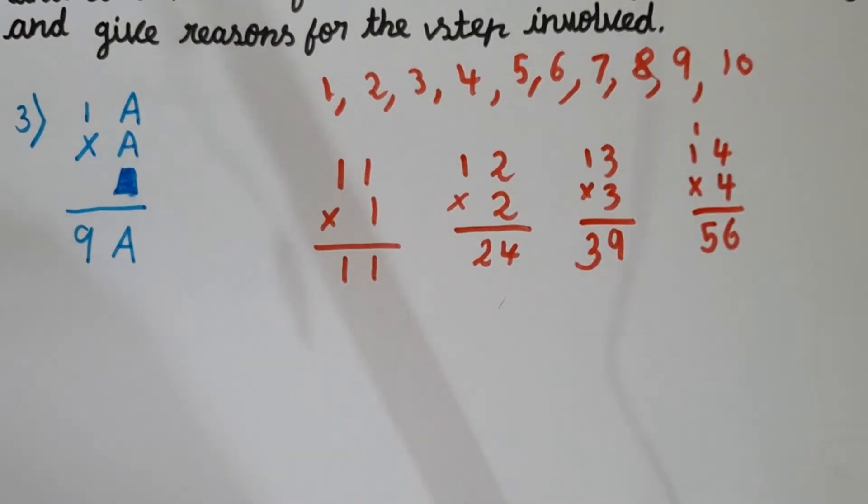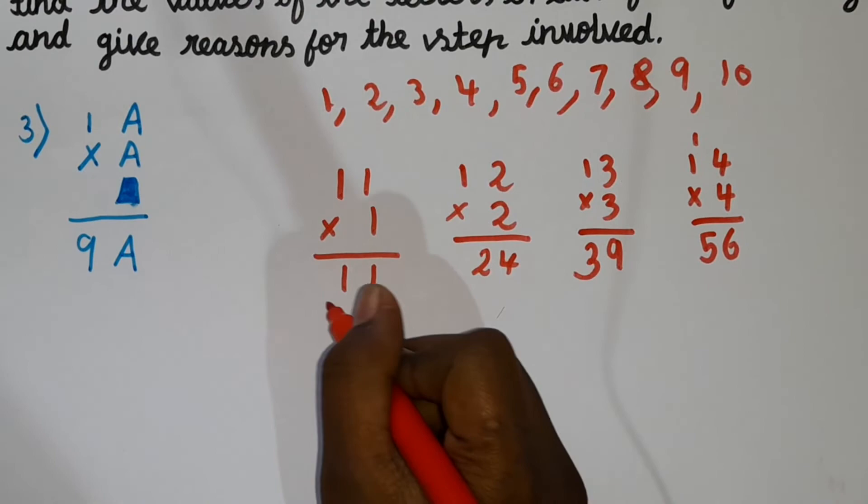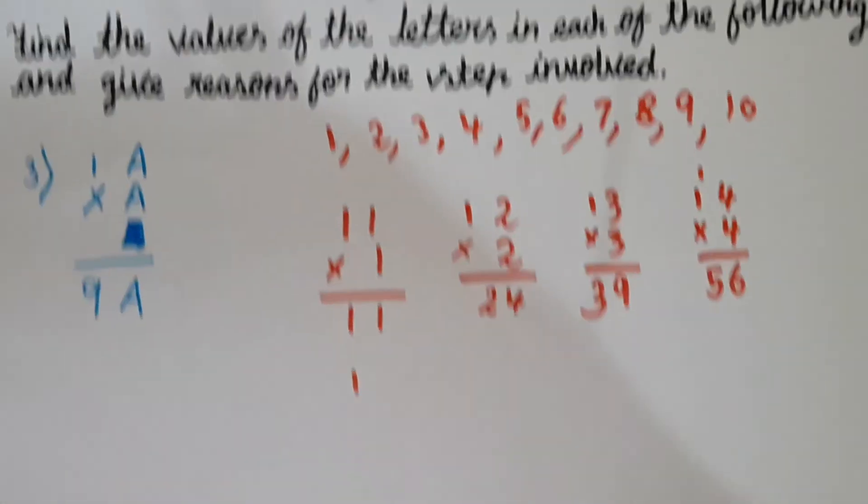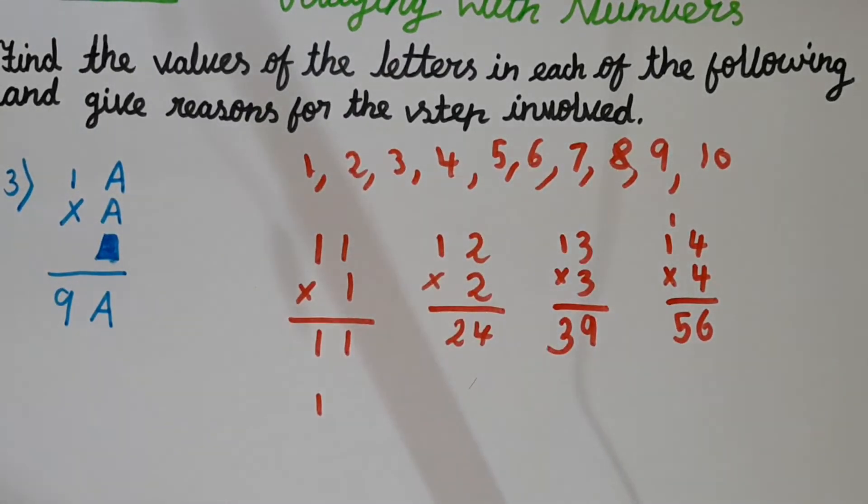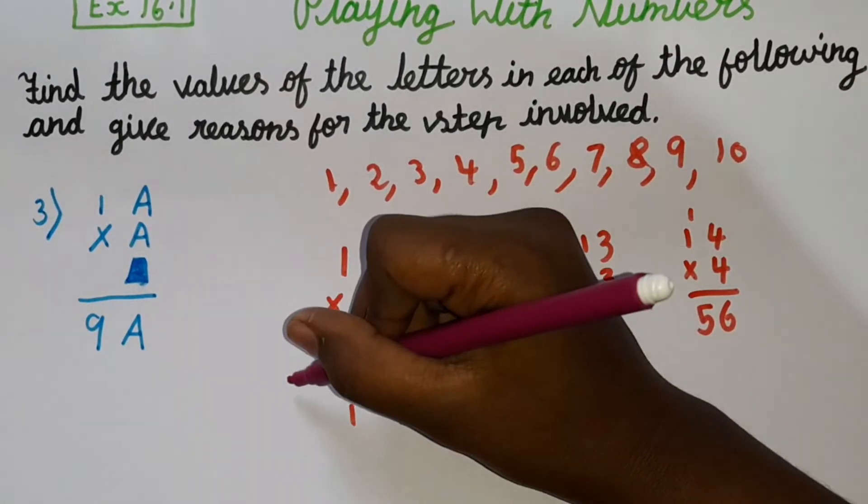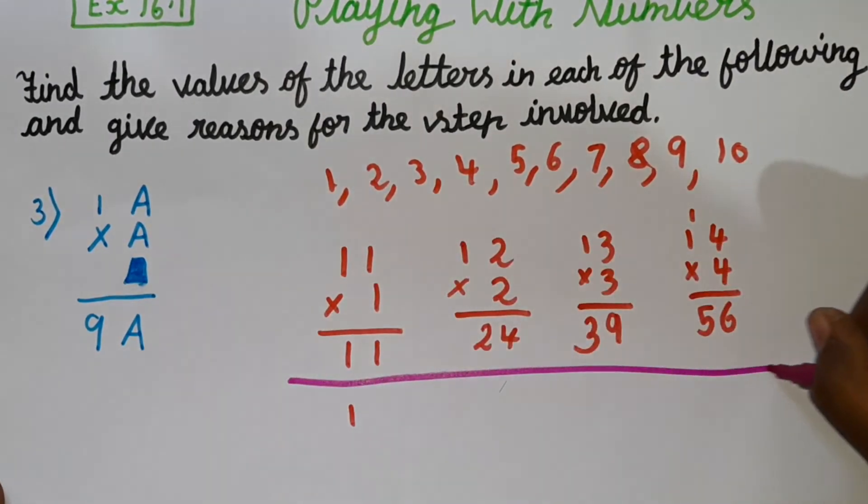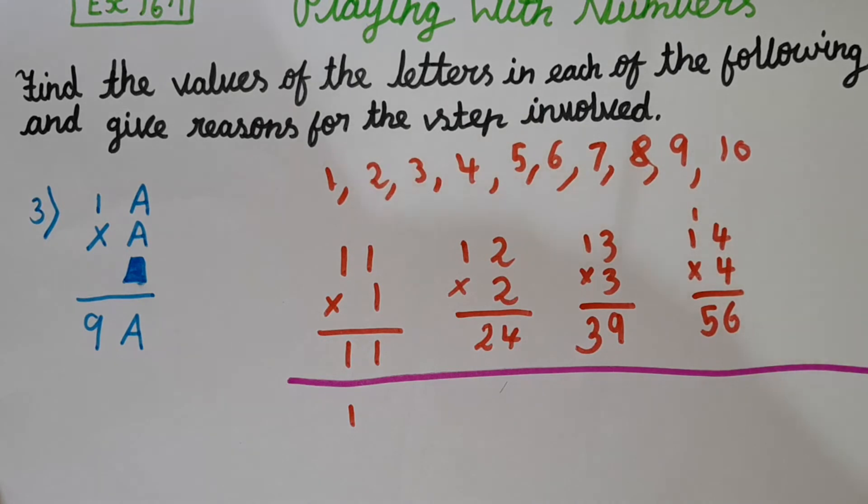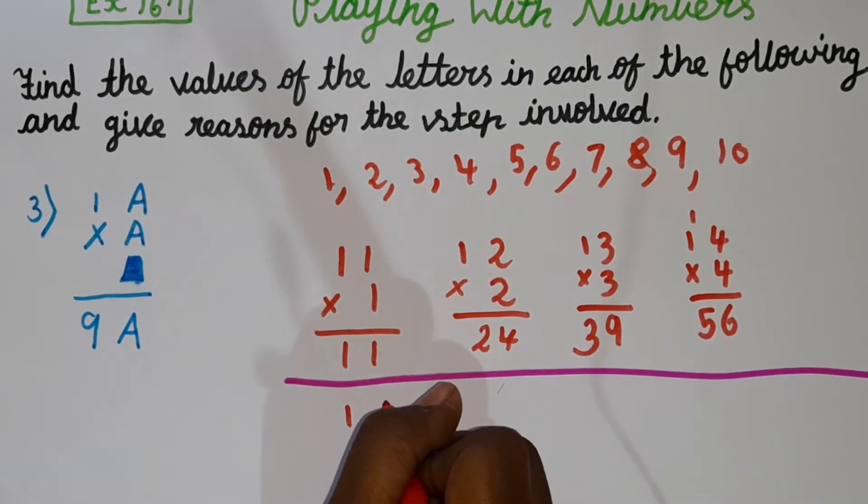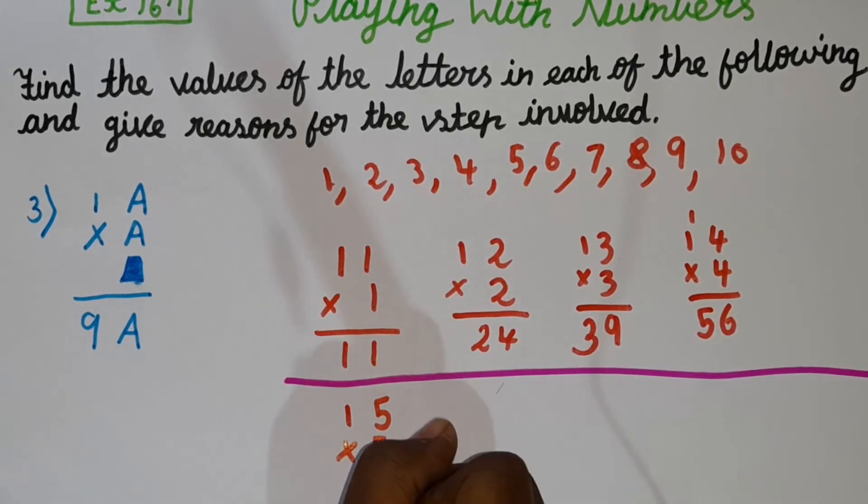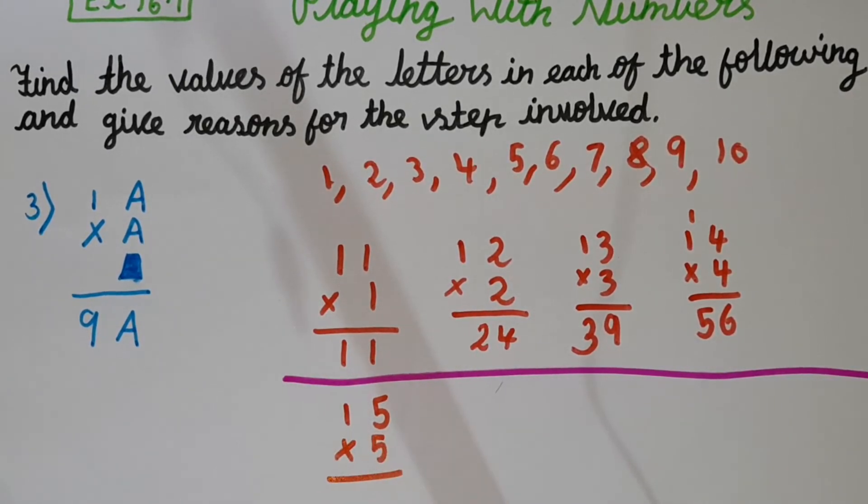Now let's try with 5. Let me draw a line here by which you won't get confused. So 1, and I am taking 5. 15 into 5. 5 fives are 25. So now at the last side, at the last number, we got 5.